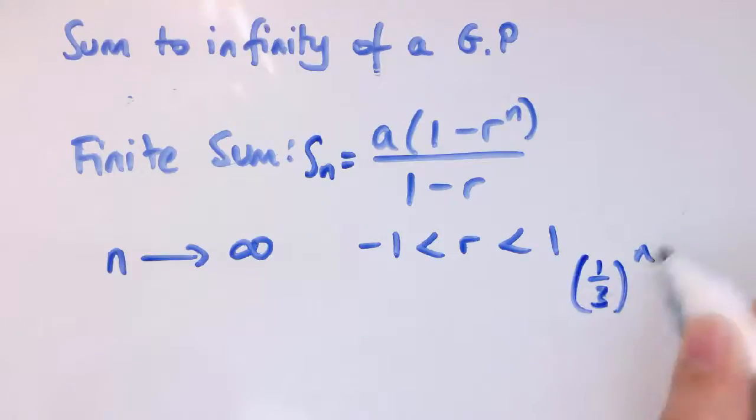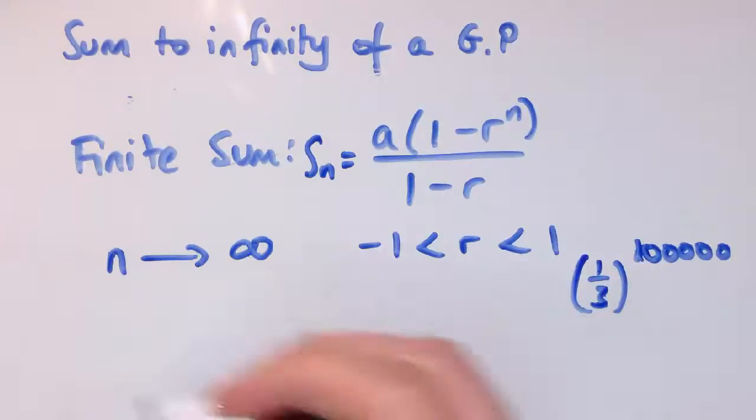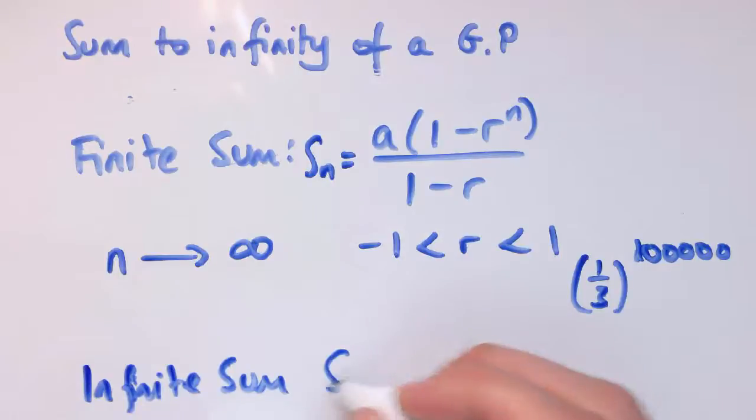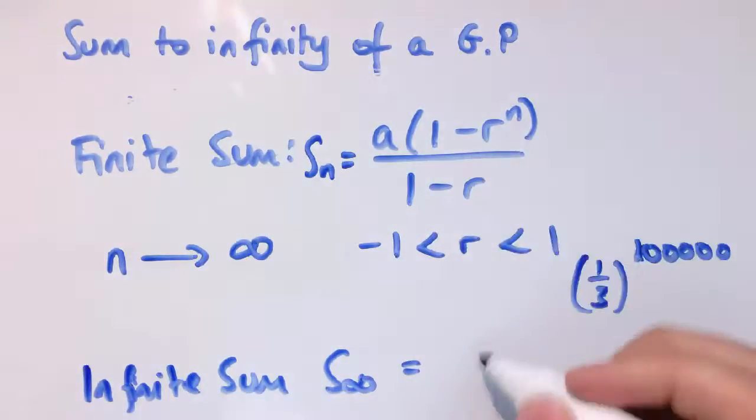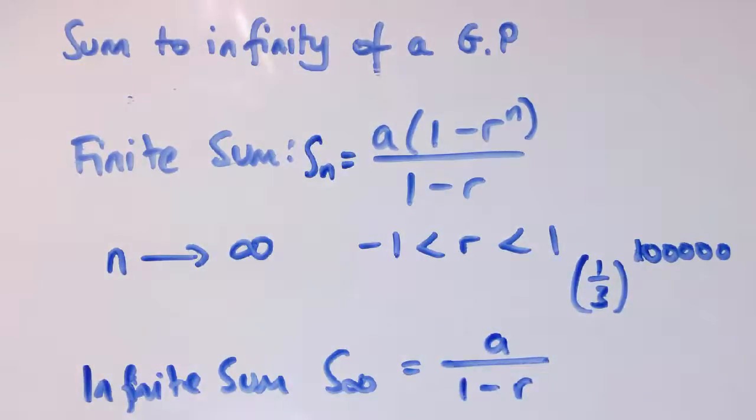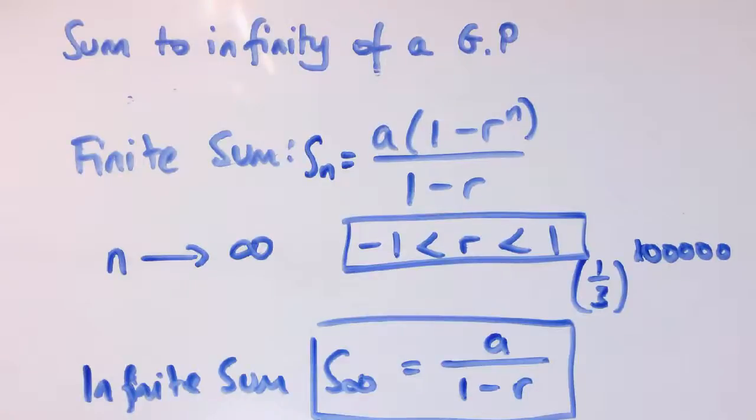The question is, what's 1 third to the n as n gets really large, getting as big as I like going to infinity? Well, any number between minus 1 and 1 raised to a very high power is very close to 0. So this term here, the r to the n, is basically 0. For the infinite sum, we can say this sum to infinity is just a times 1 minus 0, so we'll just say it's a over 1 minus r. That will be our formula for the infinite sum, so long as the common ratio is between minus 1 and 1.